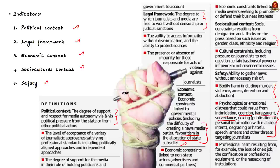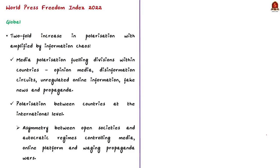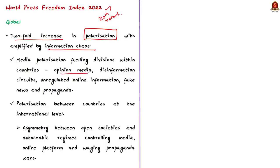The World Press Freedom Index of 2022 — the 20th report — has been released. Globally, the report reveals a two-fold increase in polarization, amplified by information chaos. Media polarization is fueling divisions within countries, and there is also polarization between countries at the international level. Divisions are growing as a result of spread of opinion media and disinformation circuits amplified by social media. Social media holds a huge chunk of unregulated online information, which encourages fake news and propaganda.